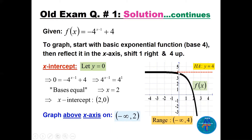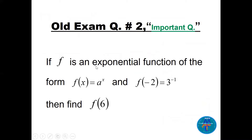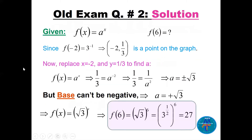Question two: f(x) = a^x is an exponential function with unknown base. Given f(-2) = 3^(-1), we use this as a point. So f(-2) equals three to the power of negative one, which means x = -2, y = 1/3. Substituting into the function: 1/3 = a^(-2), which is 1/a².